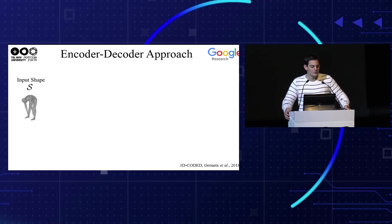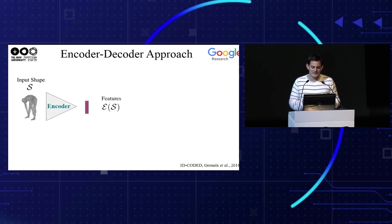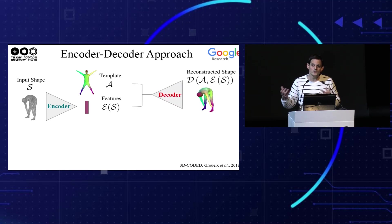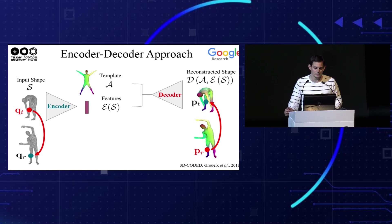A very popular approach in the literature for point cloud correspondence is to use an encoder-decoder framework. For example, in the work of 3D-CODED, the input point cloud is passed through an encoder network that computes a global feature representation. This feature vector is passed along with a template shape through a decoder network that deforms the template shape and tries to reconstruct the input shape. This process is repeated for multiple point clouds in a dataset in order to establish the correspondence between the point clouds.